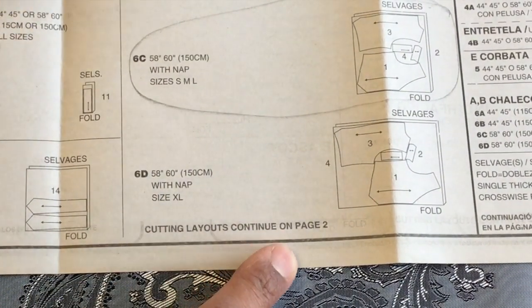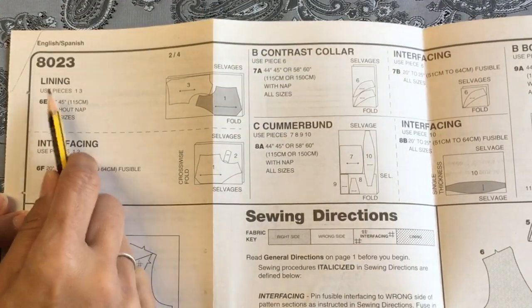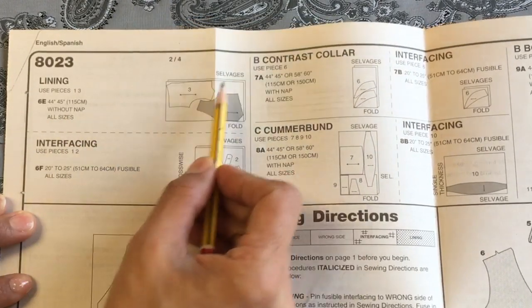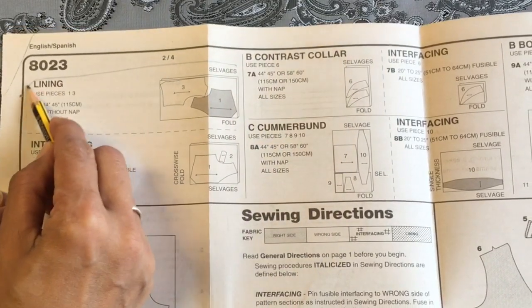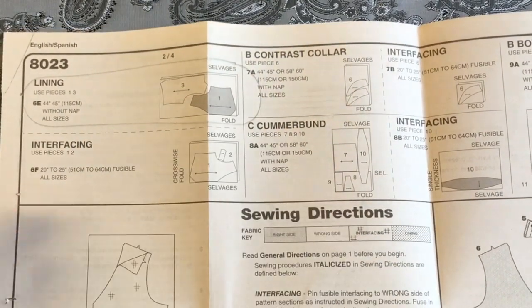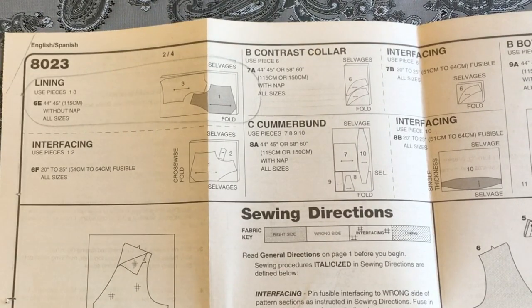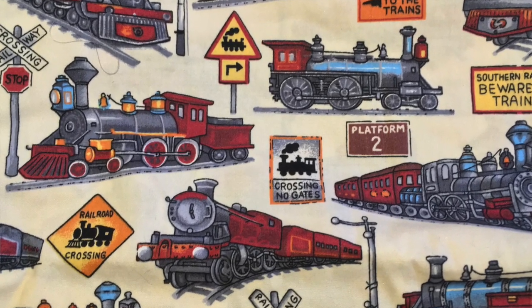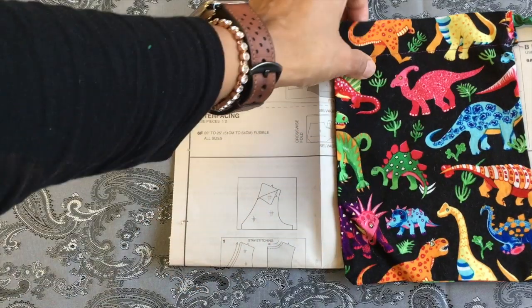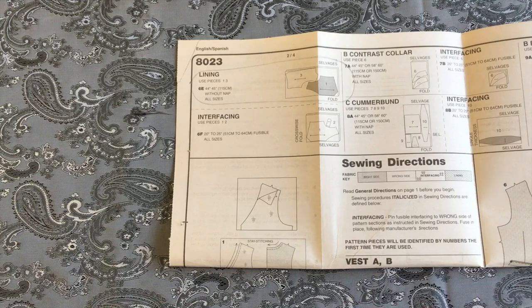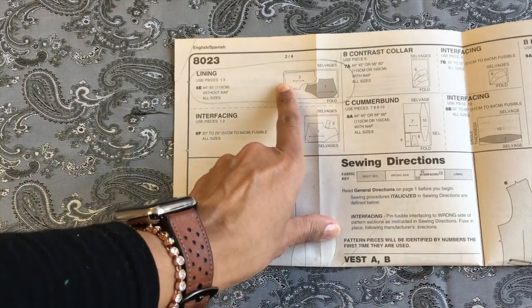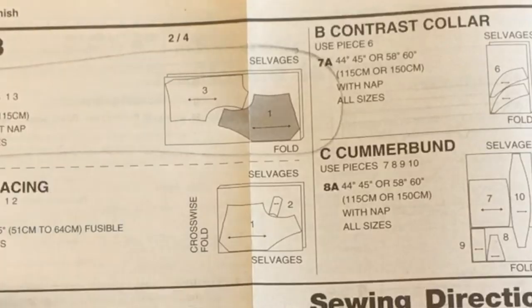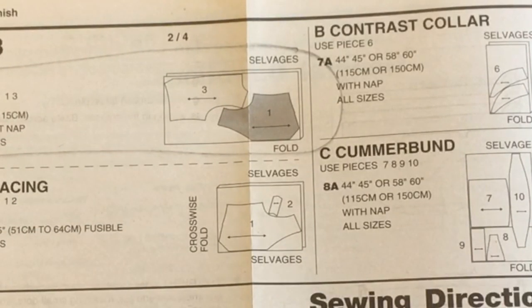It says the cutting layouts continue on page 2 instructions. And yes, it goes onto the lining. Now the lining is for a fabric that's without nap. So if you have nap, what you have to do is make sure that the fabric goes in the same direction. Can you see here how the waistcoat back piece and the front piece are in different directions? So make sure that you lay your pattern pieces out in the same direction.